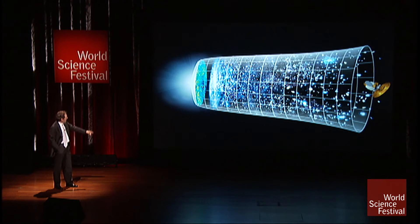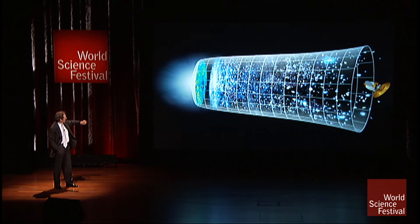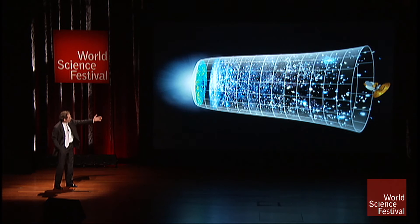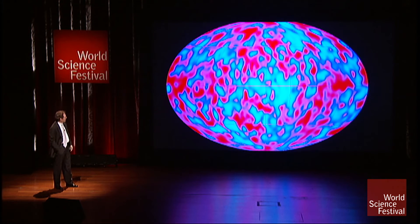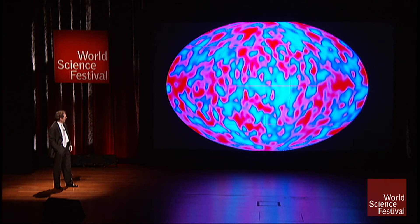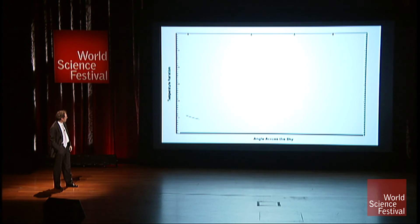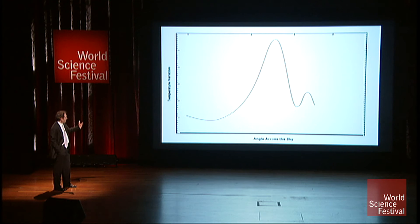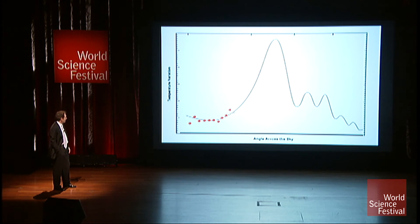If you have a device — a satellite — it can measure those hot and cold spots. The light travels to the satellite. Here is the theoretical curve coming from quantum physics and inflationary cosmology. Here is the data.